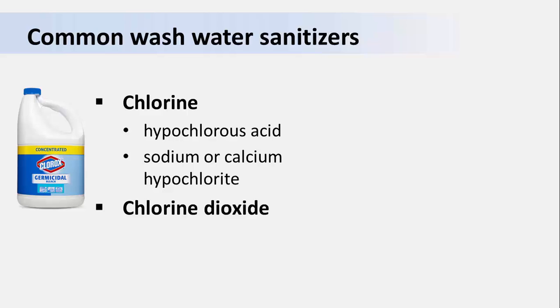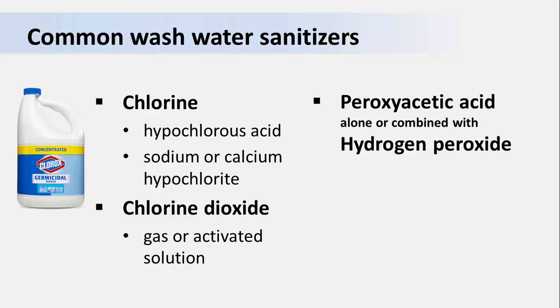A second and chemically related type of sanitizer is chlorine dioxide. Chlorine dioxide can be purchased in two forms: a gas, which you inject into the wash water, or as a chemical solution that you activate by mixing in water. There are many commercial suppliers of chlorine dioxide products that can help you pick the right one for your operation. And finally, there are sanitizers that contain peroxyacetic acid, either by itself or in combination with hydrogen peroxide, as their active ingredients.